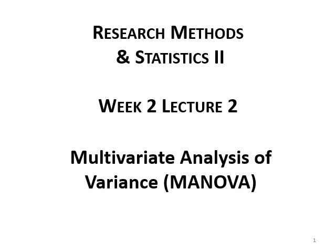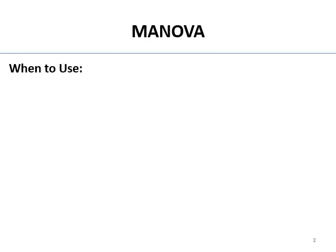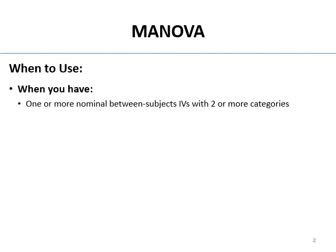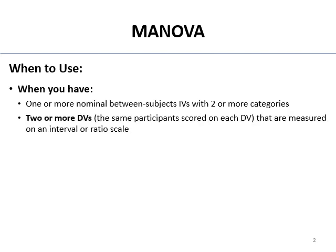All right, everyone. So week two, lecture two: multivariate analysis of variance, or MANOVA. MANOVA is what you use when you have one or more nominal between-subjects IVs — things that would be appropriate for ANOVA. But here's what sets it apart: you have two or more DVs. The DVs have to be measured on an interval or ratio scale. So this is analysis of variance when you've got more than one dependent variable.